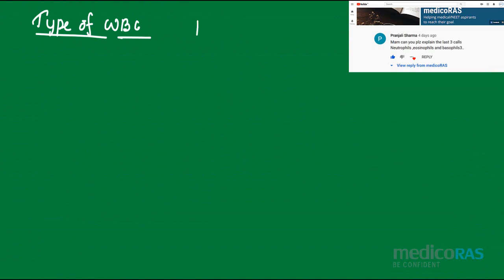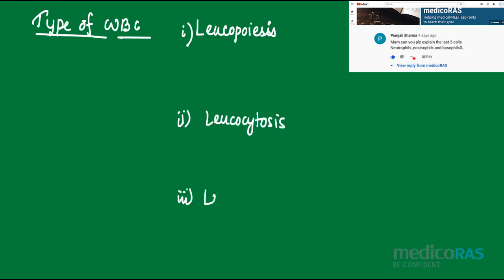Before we start with the types of WBC, there are certain terms that we need to know. The first term is leukopoiesis, the next term is leukocytosis, and the third term is leukocytopenia. Let's discuss each one briefly.